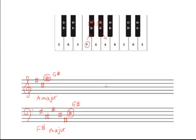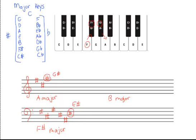Now let's do the reverse. Let's say we've been given the key of B major and we're being asked to determine how many sharps and flats are in the key signature. First, you have to know whether we're going to be dealing with sharps or flats. Here is a list of all the major keys — down the left are sharp keys, and down the right are flat keys.